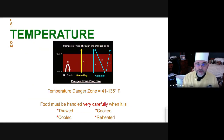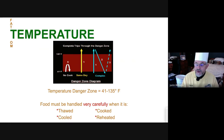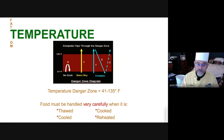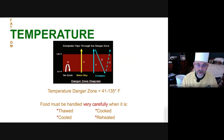The temperature danger zone is 41°F to 135°F. You want to keep your food out of the temperature danger zone as much as possible — especially RTE foods and TCS (Time/Temperature Control for Safety) foods like meat, fish, poultry, cheese, and eggs. You want to pull them out, prep them, cook them, and serve them. You do not want them sitting out any longer than they have to be.